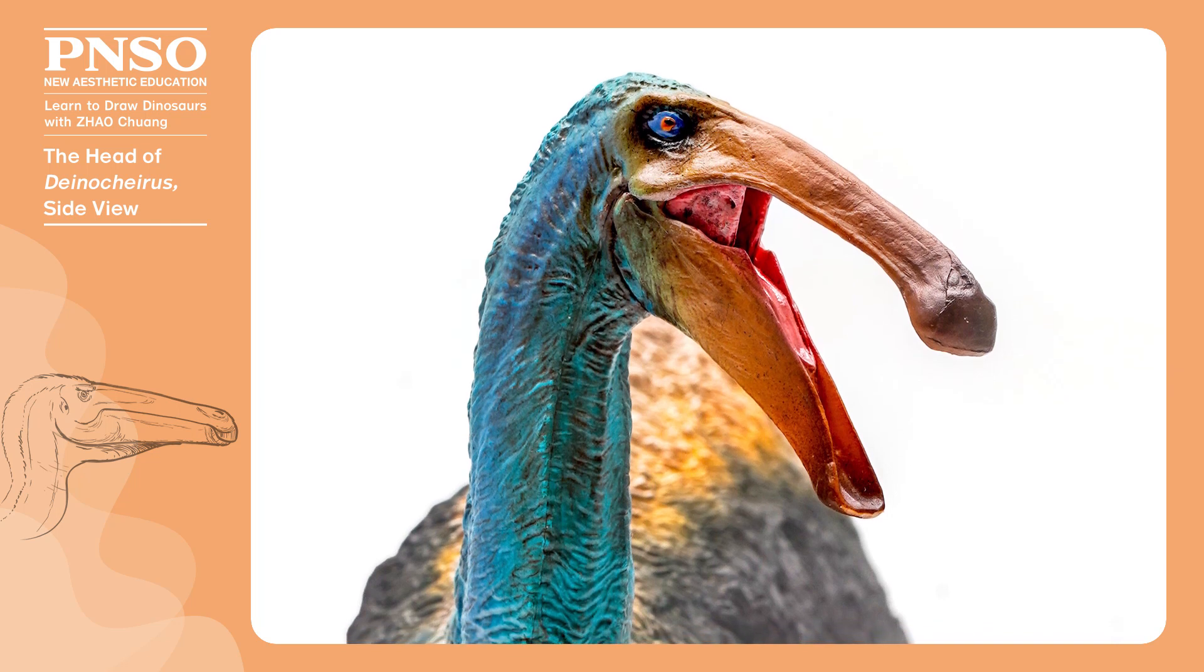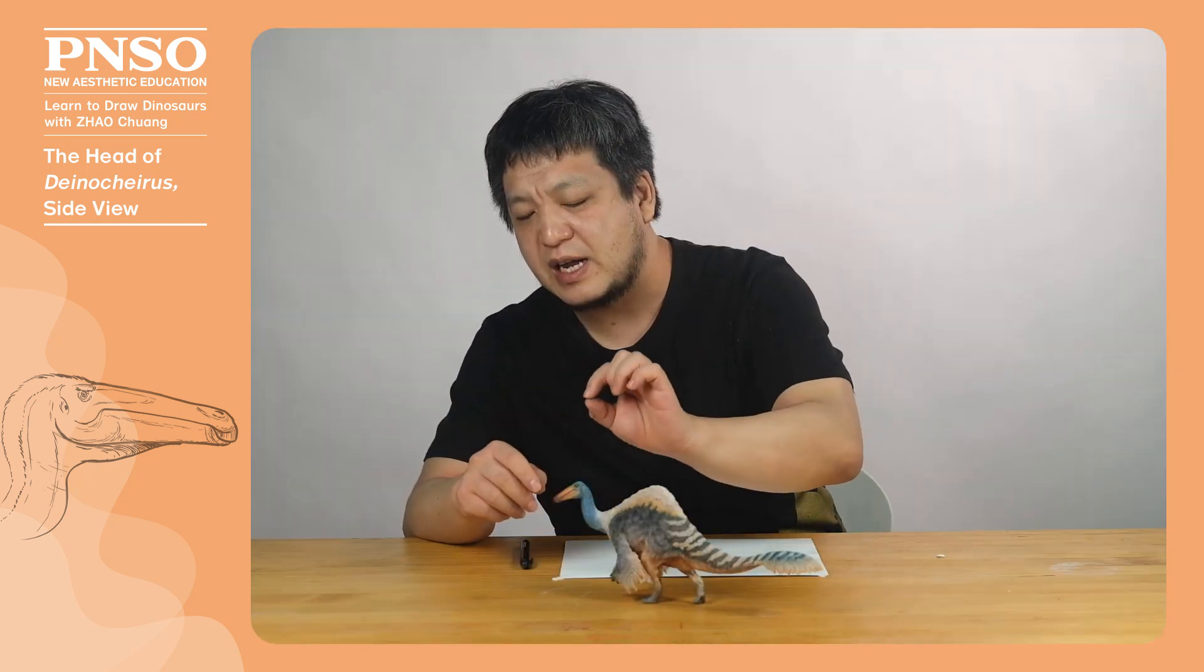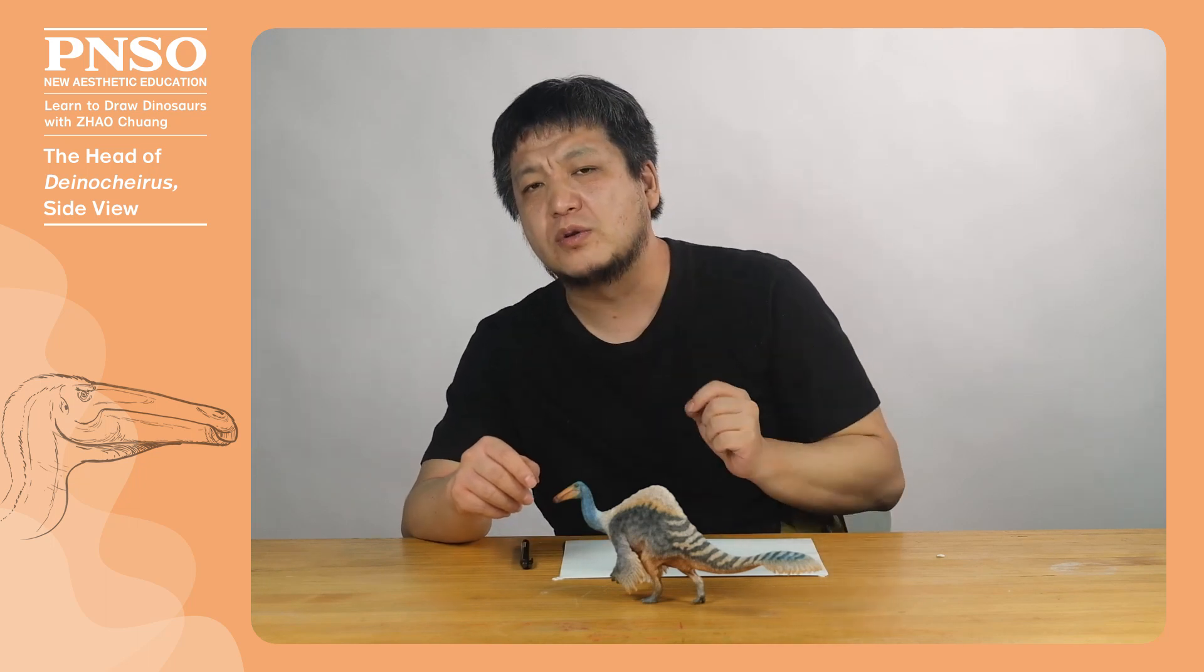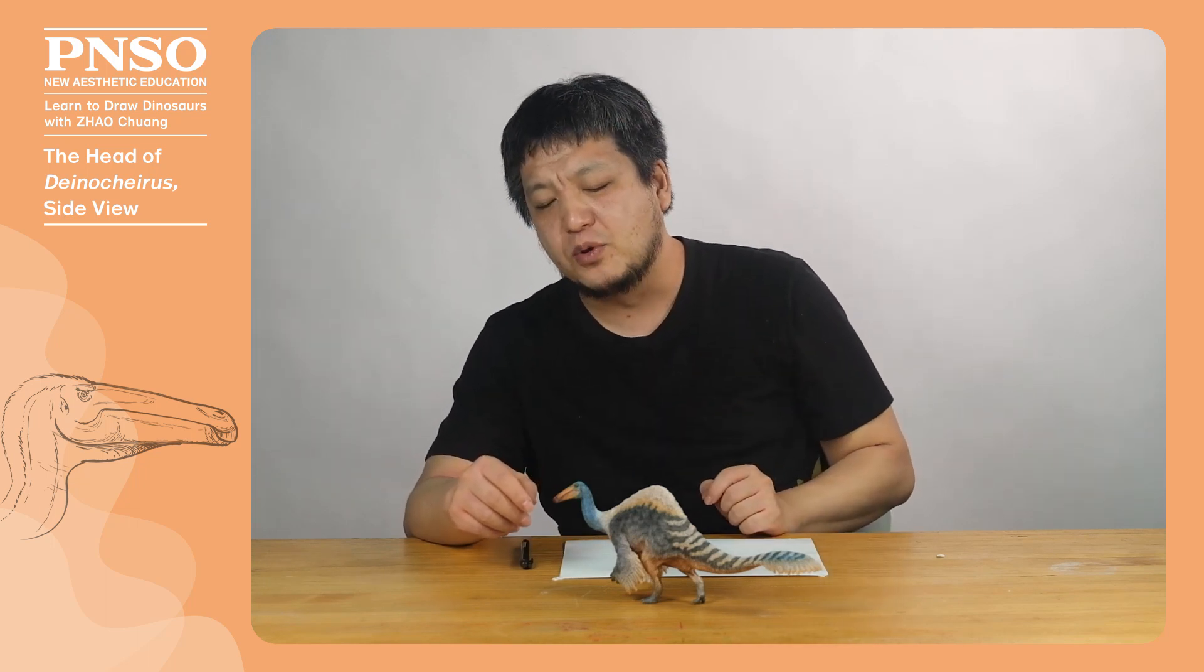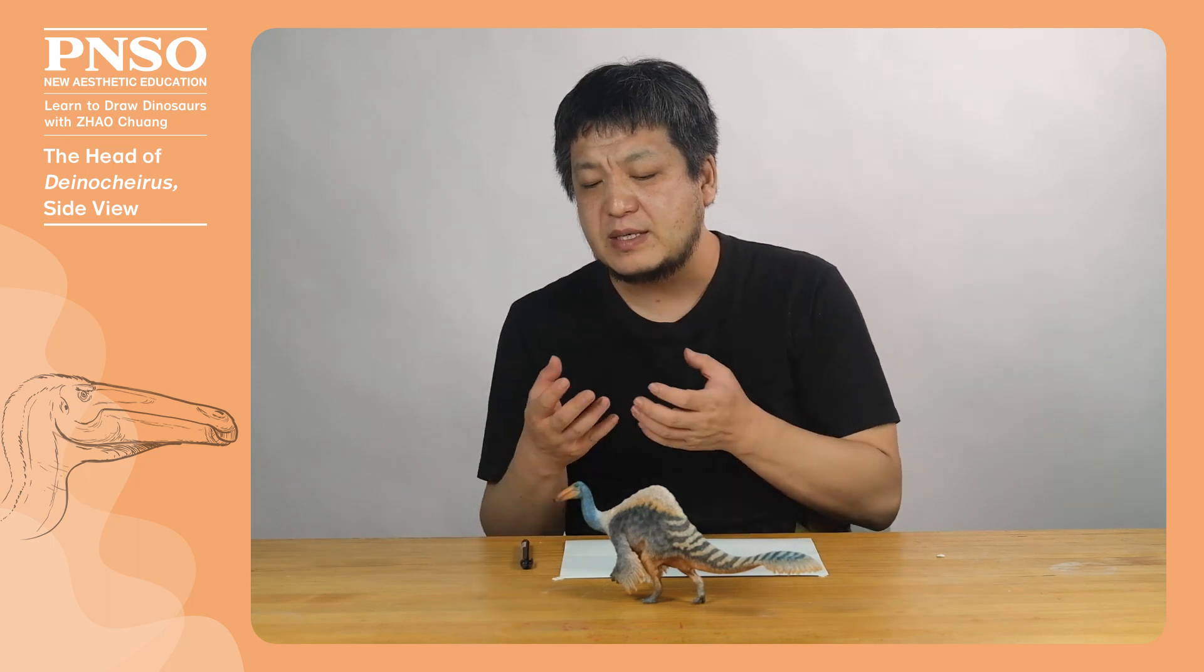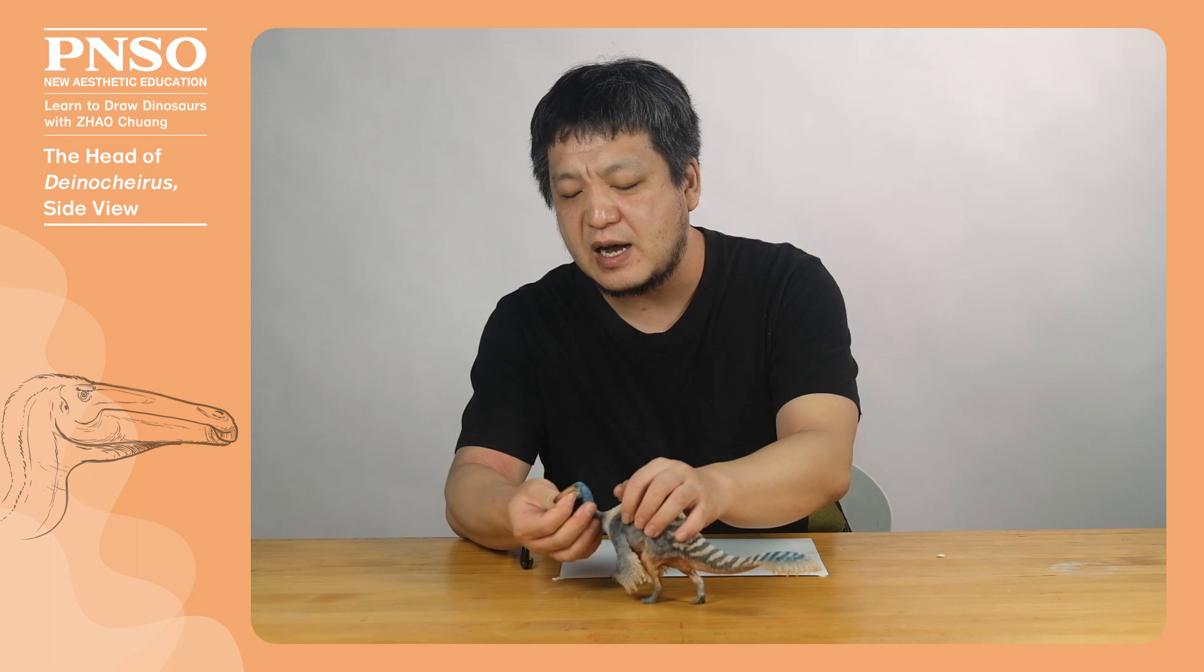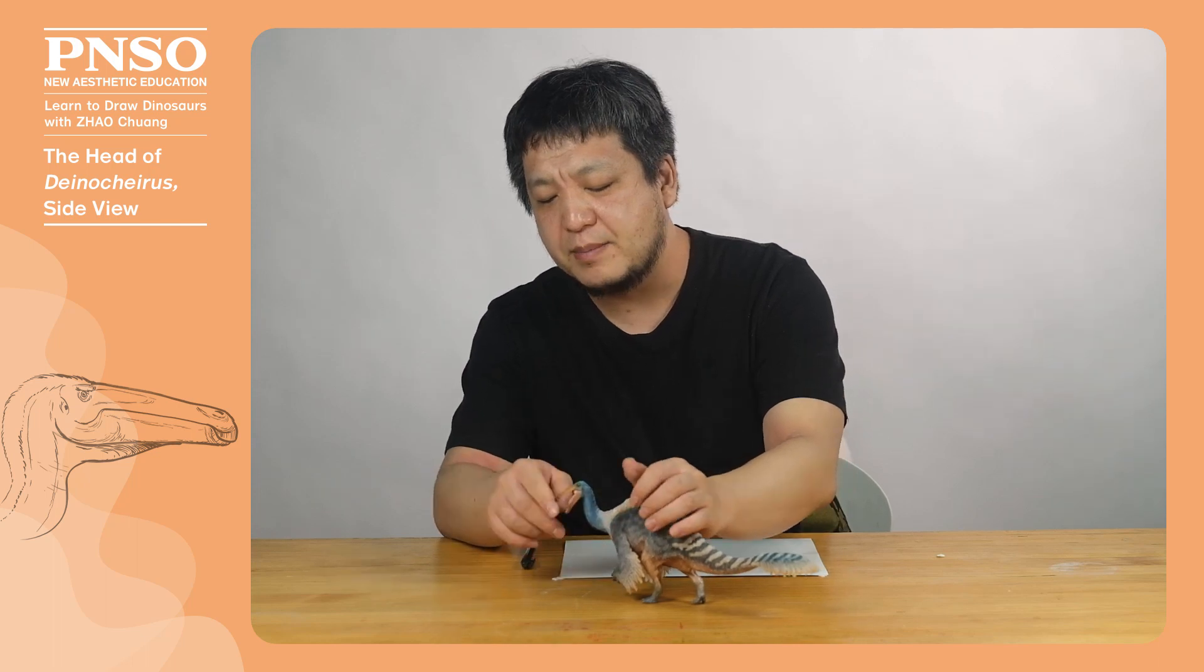The front of its mouth was like a duck's. When alive, it might have a downward extending beak. It probably preyed on fish because fish scales were found in its stomach. The diet of fish or aquatic plants might make its mouth have evolved into a duck-bill shape or a downward curved beak.